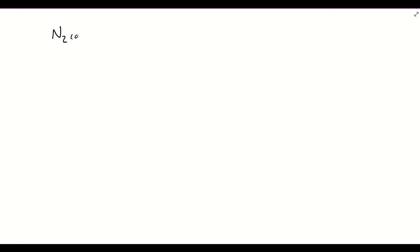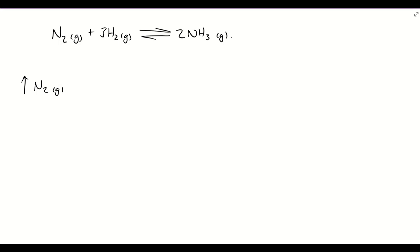Let's take a look at a final example — this time looking at changing the total pressure of the system, using the Haber process. The Haber process is nitrogen gas reacting with hydrogen gas in a reversible reaction with ammonia. If we added some nitrogen gas to this system — pumped in some nitrogen gas — this is like the concentration example we were looking at earlier. We would increase the amount of nitrogen gas and counteract that change by using this nitrogen gas up, so we'd favour the forward reaction.